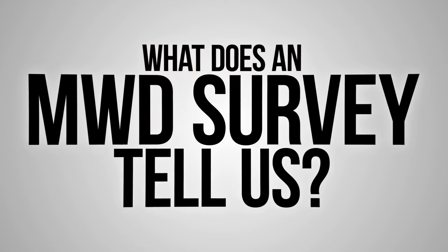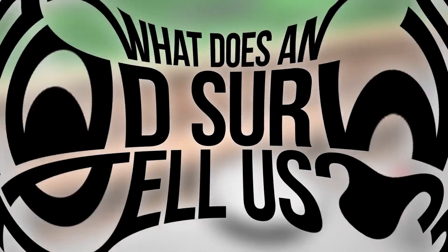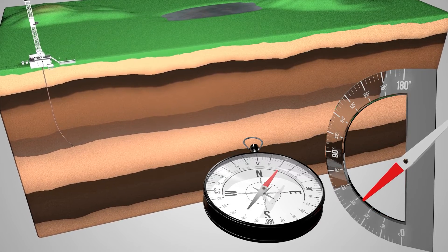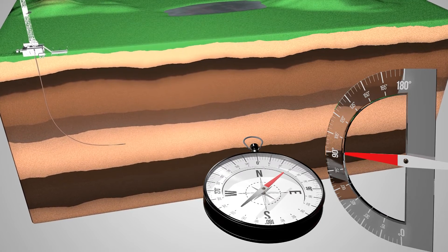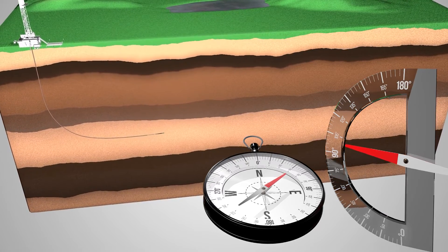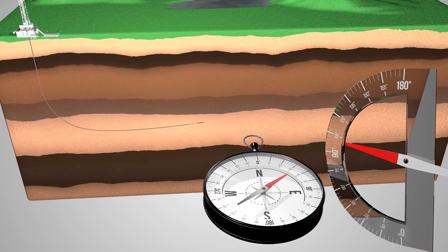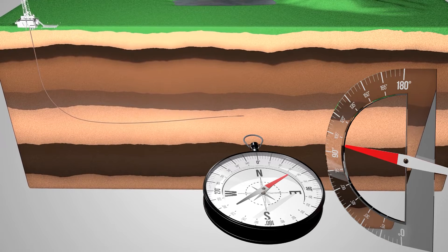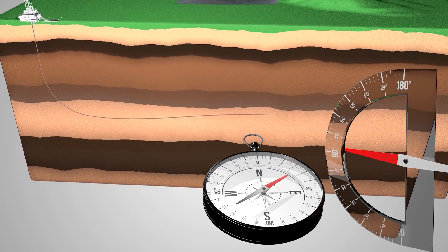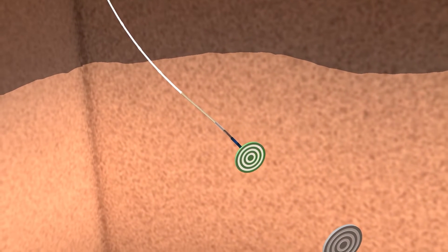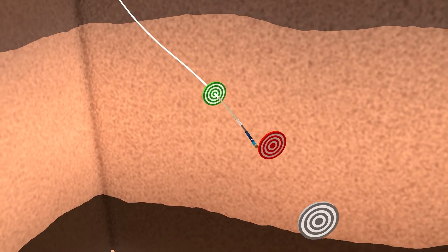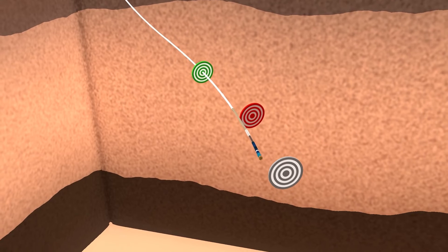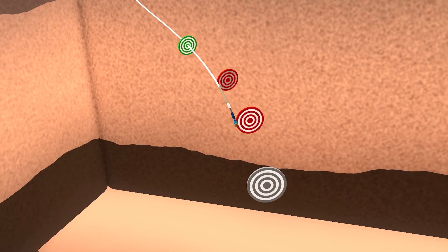So what does an MWD survey tell us? An MWD survey tells us the orientation from vertical and from magnetic north of the MWD tool. From there, the survey can be converted to the appropriate north reference and used to calculate the position of the well in conjunction with the other surveys. The takeaway is that the wellbore's position is calculated based upon the surveys, and any error in the survey measurement will cause error in the positional calculation of the well path.